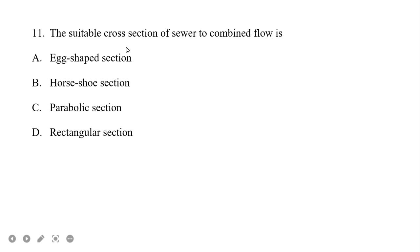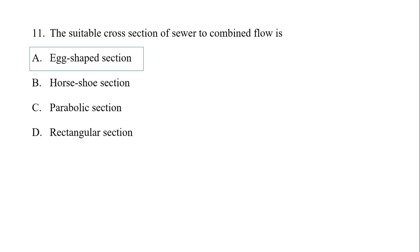The suitable cross-section of a sewer for combined flow is separated from that for separate flow. Combined flow sewers are separated from the sewer handling house drainage. We also need to maintain a self-cleansing velocity in sewer lines and discuss peak flow conditions.